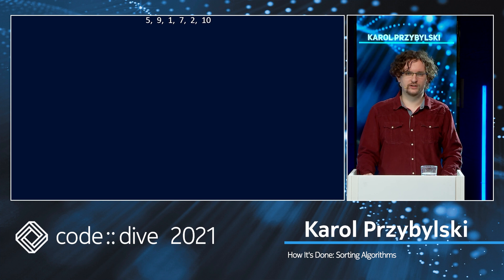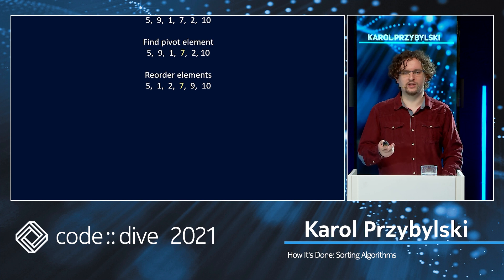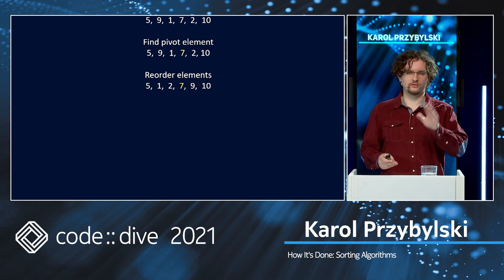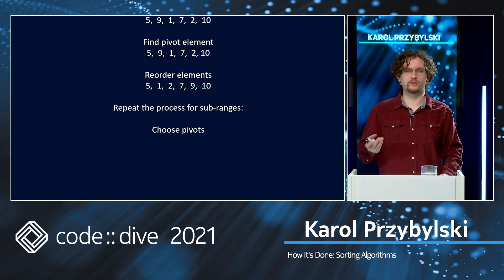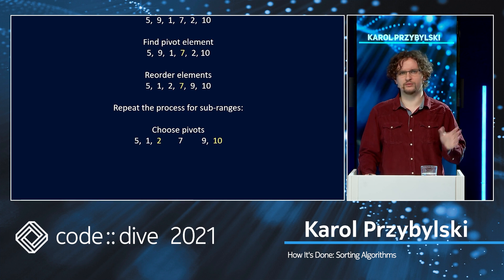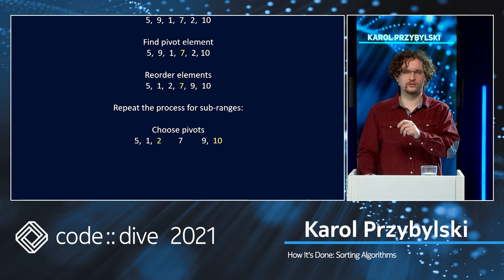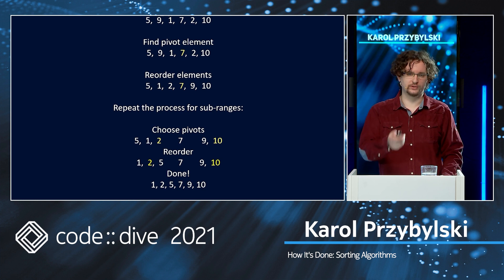Let's imagine we have an array of six integers and we want to sort it using Quicksort. First we find the pivot element — in this case it will be the middle-right element, so seven. Then we are reordering the elements: elements less than pivot on the left, elements greater than pivot on the right, sorting in ascending order. So five, one, two — lesser than seven — then nine, ten. Then we are repeating the process for the sub-ranges. We have two sub-ranges and we are choosing the pivot value. For the first sub-range we choose the rightmost one, two. For the other, ten is the pivot value. Again we reorder the values around pivot, and we are done because the array is sorted.